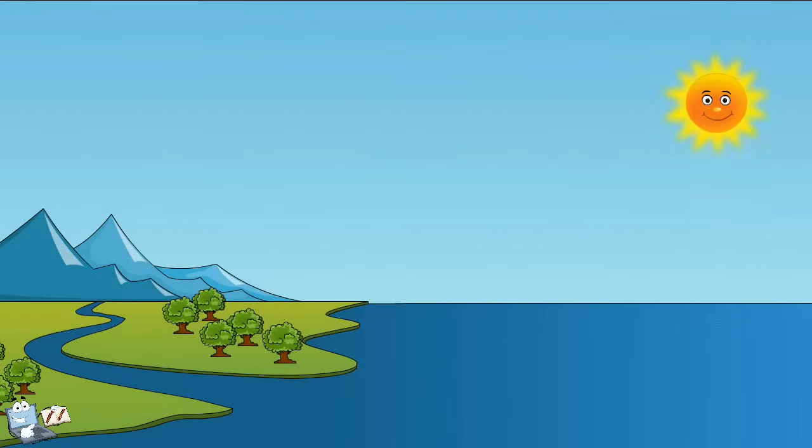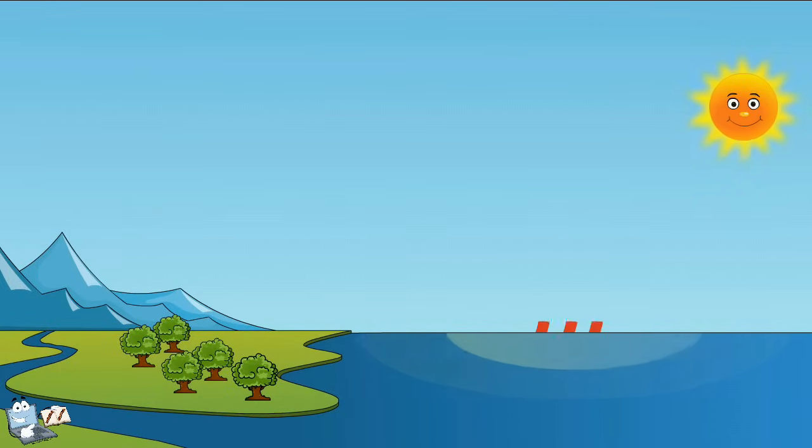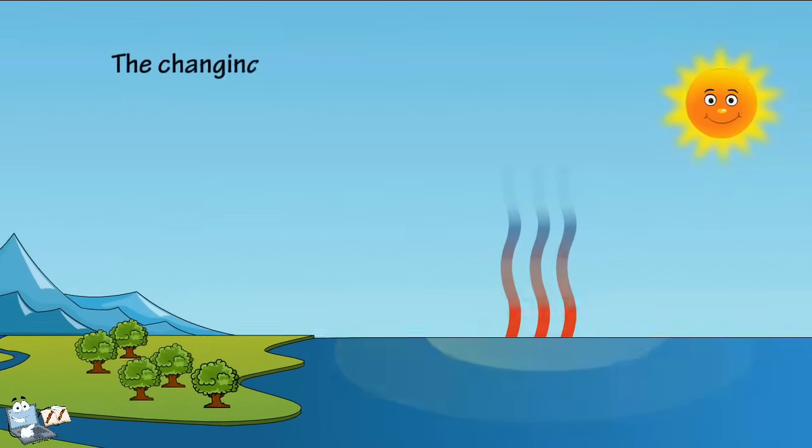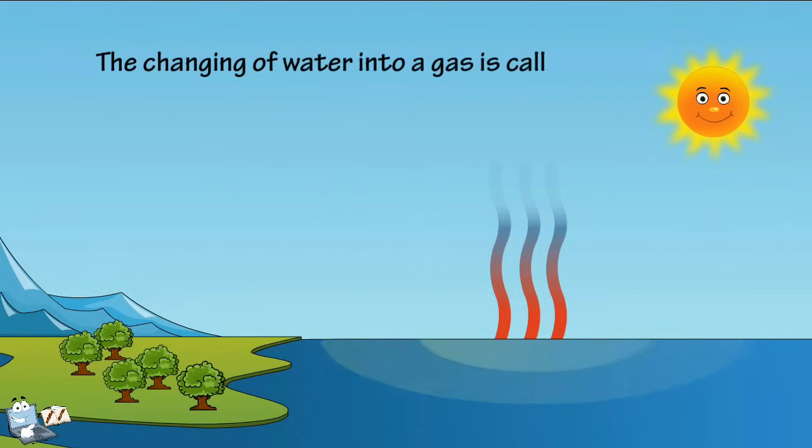So here is the sun. When the sun shines, the heat of the sun warms the water, turning it into an invisible gas called water vapor. This process, the changing of water into a gas, is called evaporation.